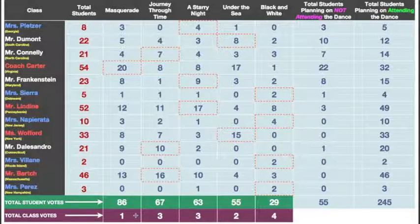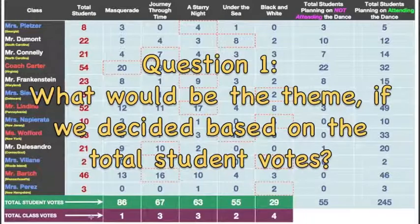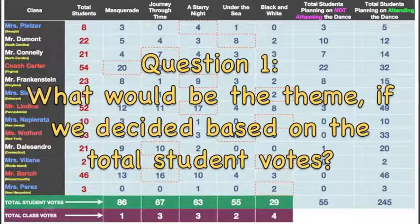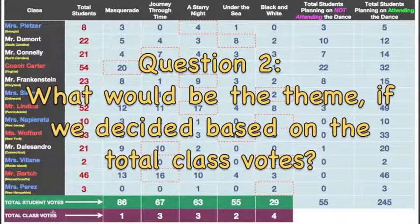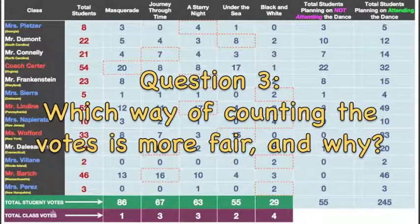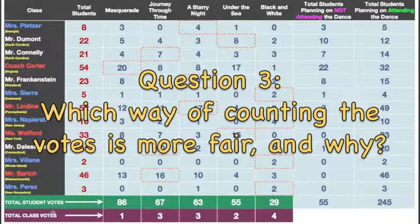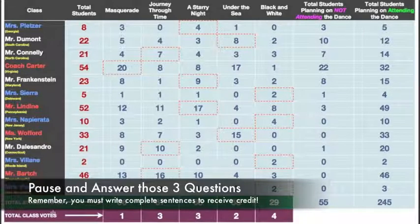So the first thing I want us to do is make sure we understand what theme wins given either the green row's rules or the purple row's rules. On your paper, you're going to answer these questions. First question: what theme would win if we decided based on the total student votes? Second question: what theme would win if we use total class votes? Third question: which do you think is most fair and why? Talk about this with your shoulder partner, and remember we're looking for complete sentences. Go ahead and pause and do that, and when you come back with your answers written down, we'll discuss.